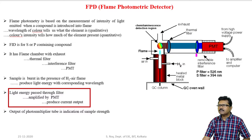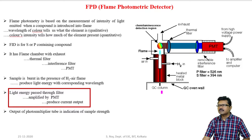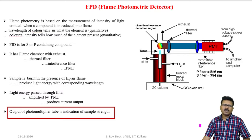If we want to detect sulfur content, the monochromator should be chosen to allow light energy with a wavelength of 394 nanometers. Ultimately, the corresponding light energy passes through the interference filter and is detected by the photomultiplier tube. The photomultiplier tube multiplies the signal and produces an electrical output. The magnitude of this electrical output is the indication of the strength of the sample. If the concentration of sulfur or phosphorus is higher, the output will be higher; if lower, the output will be lower.